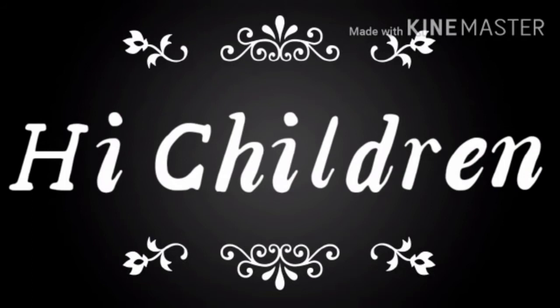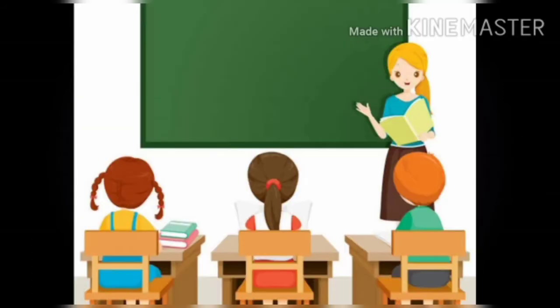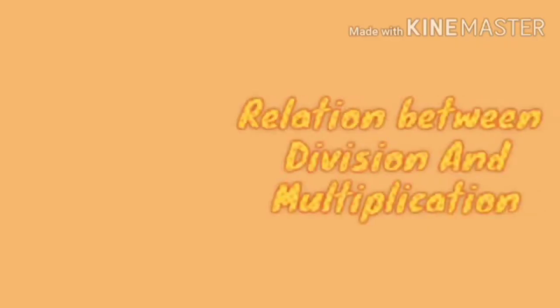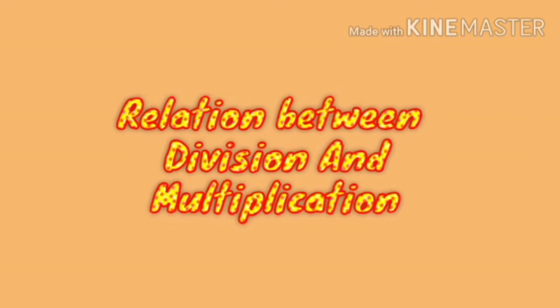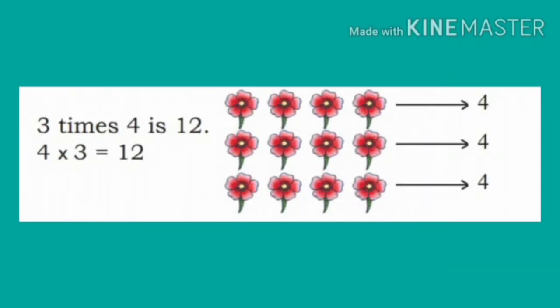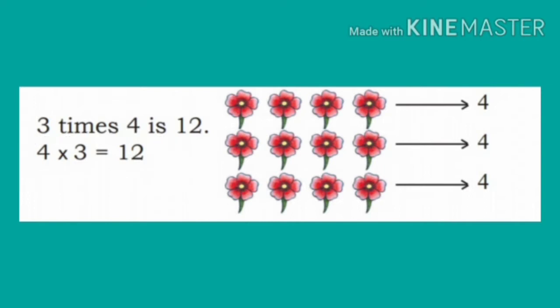Hi children, today we are going to learn about the relation between division and multiplication. Children, you already know about multiplication form. 4 into 3 is equal to 12.